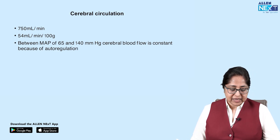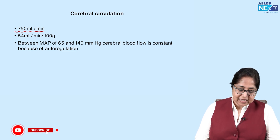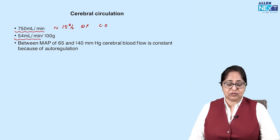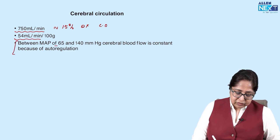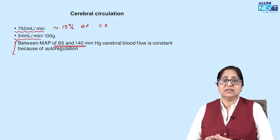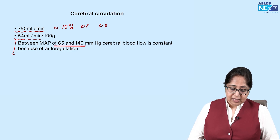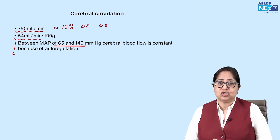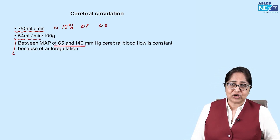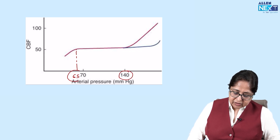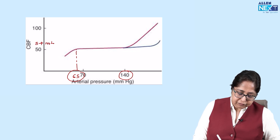Now let's look at the cerebral circulation. Cerebral blood flow is 750 ml per minute — approximately 15% of cardiac output — or 54 ml per minute per 100 grams of tissue. Between a mean arterial pressure of 65 and 140 mmHg, cerebral blood flow is constant due to excellent autoregulation. If blood pressure falls below 65, there is a CNS ischemic response. The graph confirms that between approximately 65 and 140 mmHg, cerebral blood flow remains constant at approximately 54 ml per minute per 100 grams.